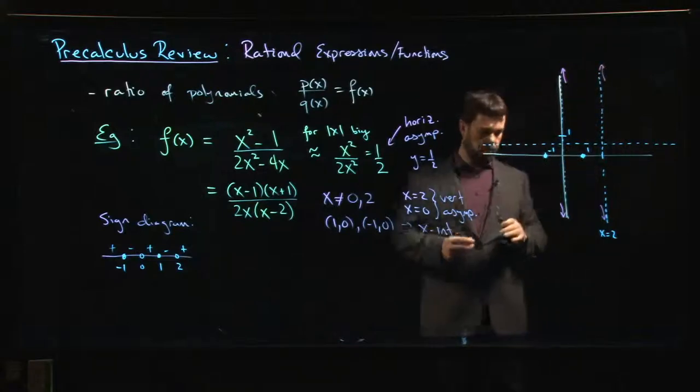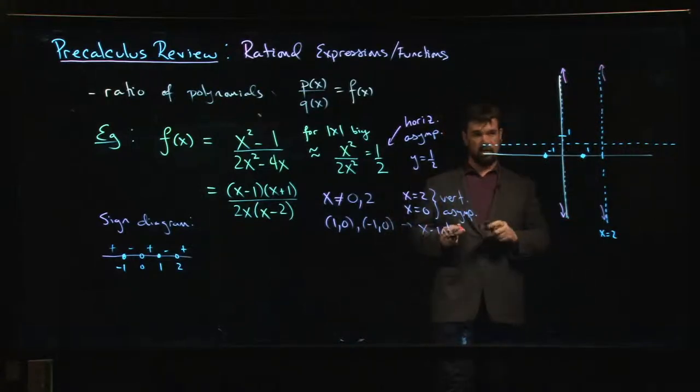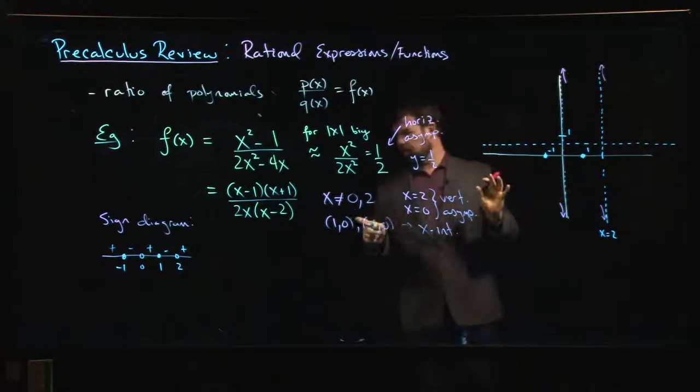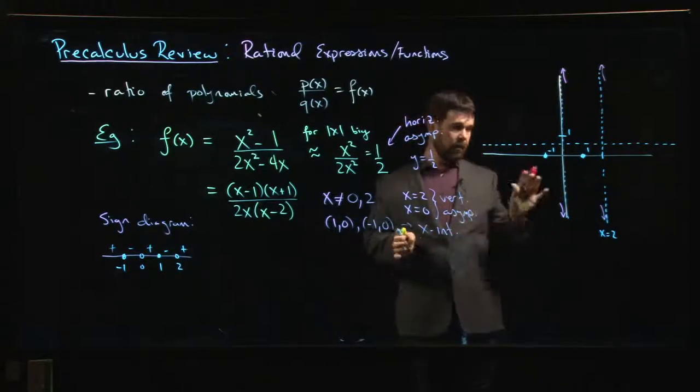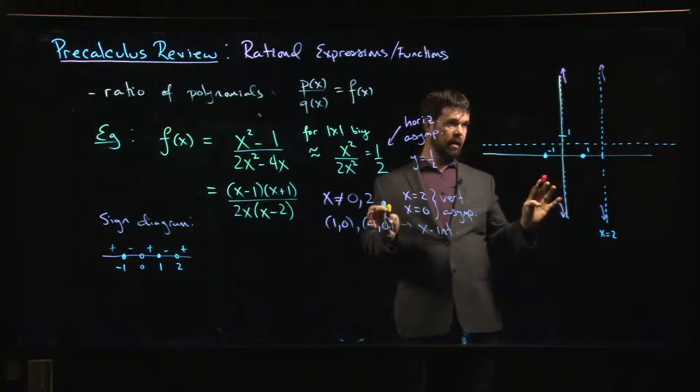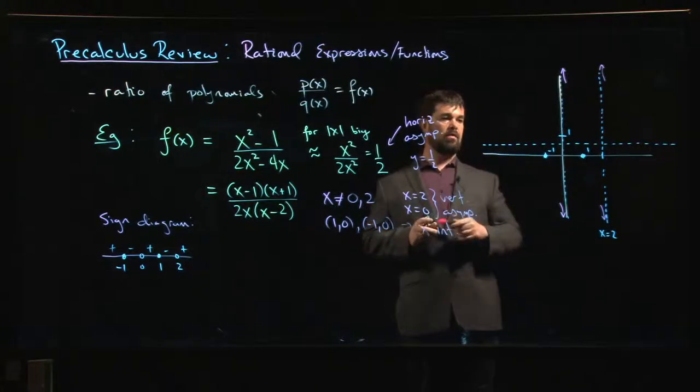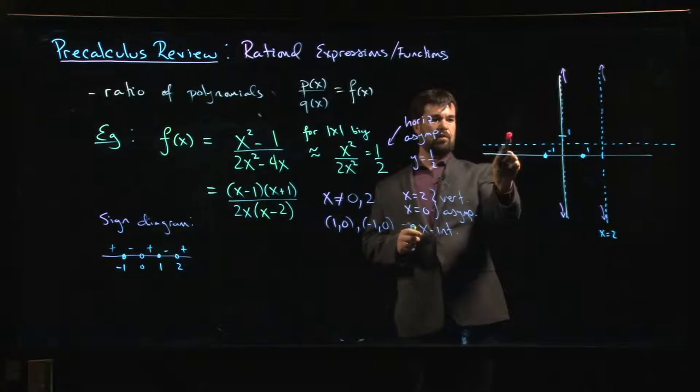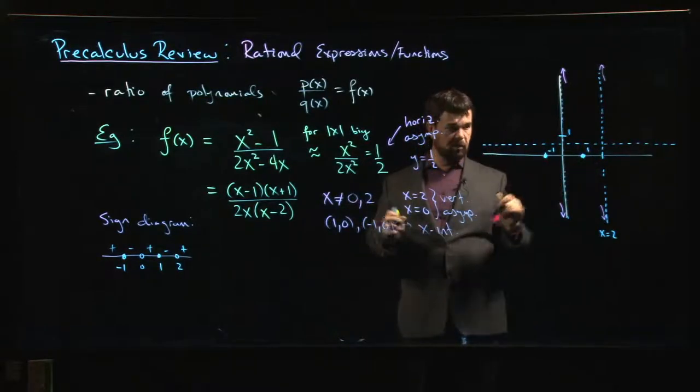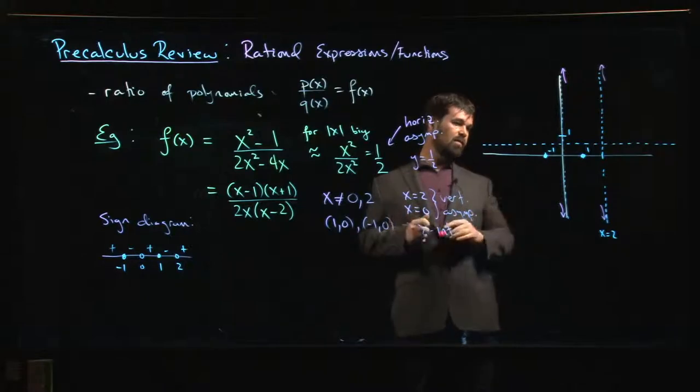The one thing that I don't quite get from the sign diagram, and I may not be able to determine exactly, is am I going to approach this horizontal asymptote from above or from below on either side? That's a little bit trickier to work out.